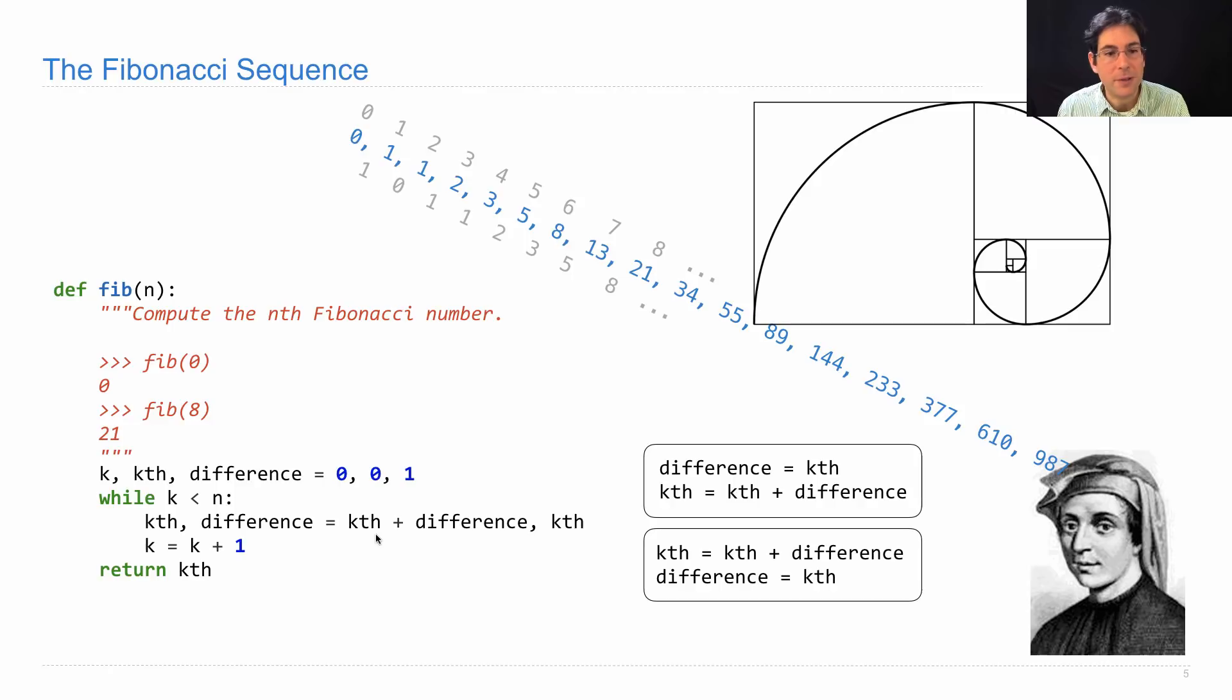If you want to compute the result and you're not allowed to assign two names at once, then you'd have to introduce another name to keep track of some value temporarily. One possible solution is to introduce a name old_diff, which keeps track of what the difference used to be. In this version, we keep track of that previous number by assigning difference to it.